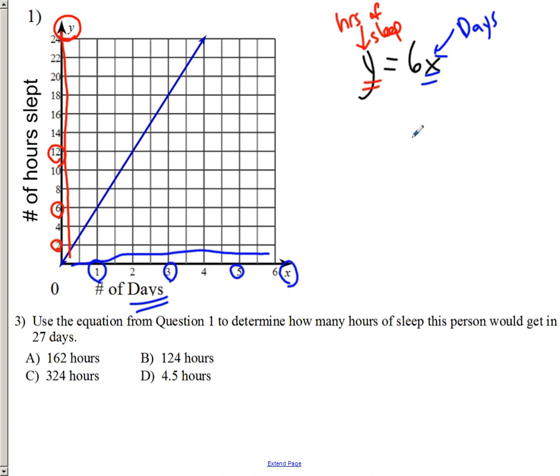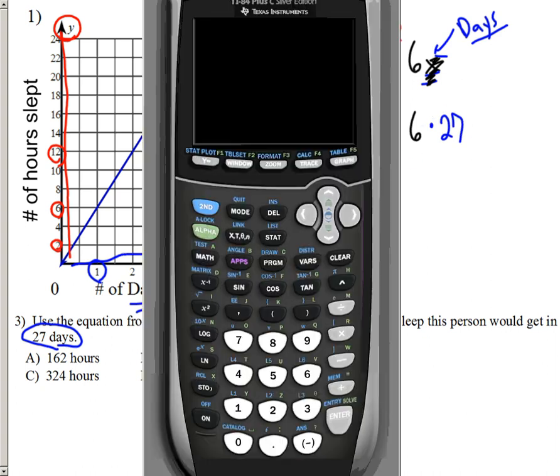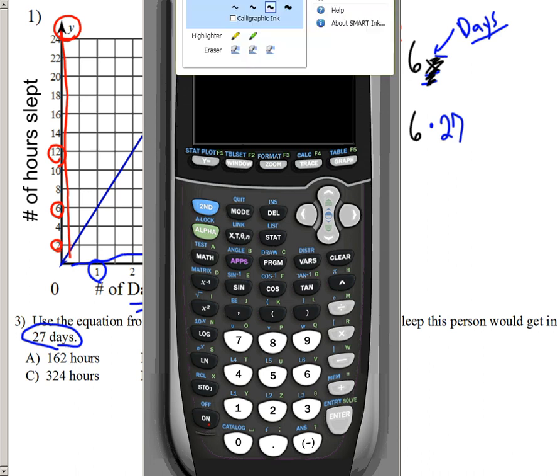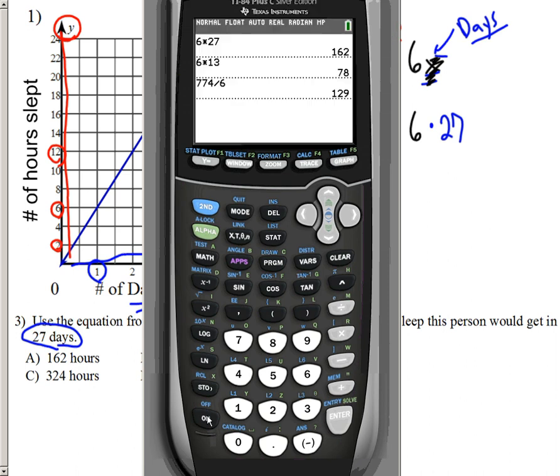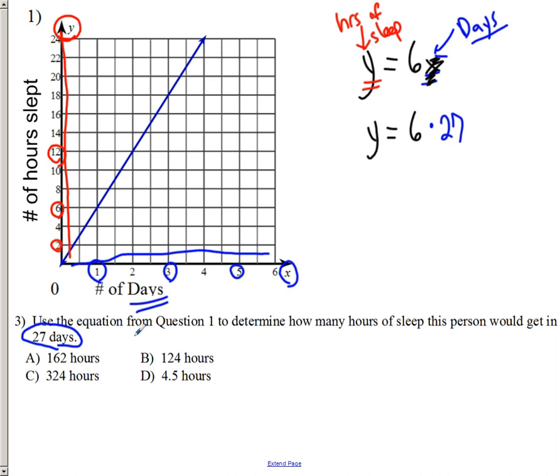So, once we know what the Y and the X stand for in this equation, it's not too bad when we say, how many hours of sleep would this person get in 27 days? Well, since they gave us 27 days, I can rewrite this whole equation. Instead of X, I just pop in the 27 because it's 27 days. And now, it's 6 times 27. We just pull the calculator up. And it would be 162.